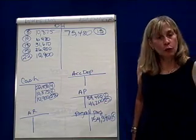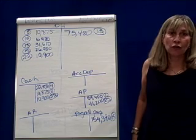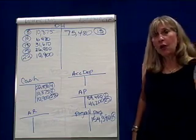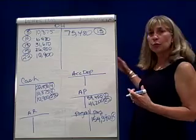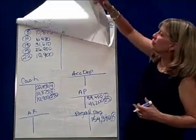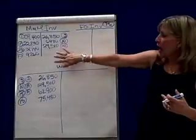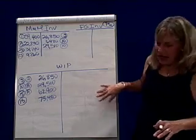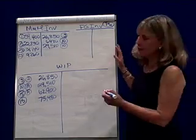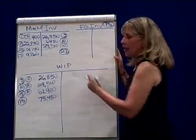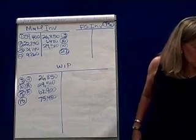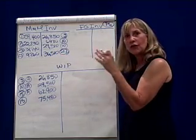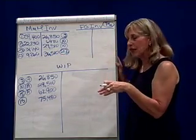On the 27th, we requested or requisitioned direct materials for Job A, Job B, and Job C, and also some indirect materials. When we requisition materials, they enter the production process, which means they're going to leave material inventory and go either into work in process, or if they're indirects, into overhead. On the 27th, I'm going to credit material inventory for $36,510, and that includes all the materials for Job A, B, and C, as well as the indirects.